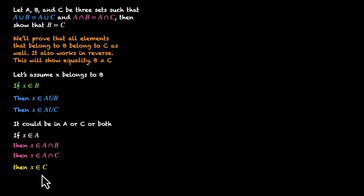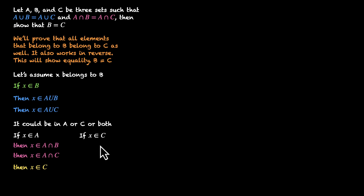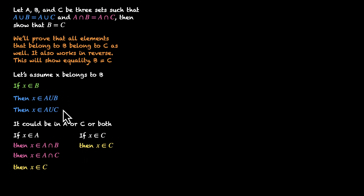Now let's go back and assume x does not belong to A. If x does not belong to A but is in A union C, it must be coming from C — so x belongs to C. We have proved that in both cases x belongs to C, which means if x belongs to B, then x belongs to C.